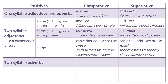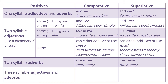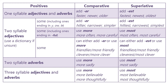For two-syllable adverbs, use MORE for the comparative: more sadly. And for the superlative, use MOST: most sadly. For three-syllable adjectives and adverbs, use MORE for the comparative: more believable, more thoughtfully. And for the superlative, use MOST: most believable, most thoughtfully.